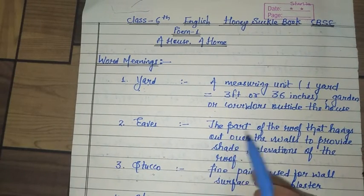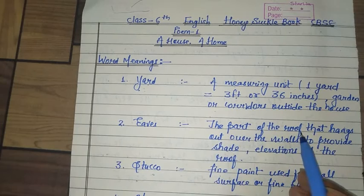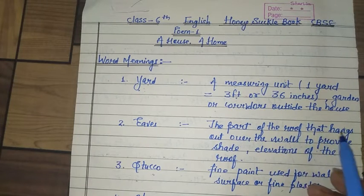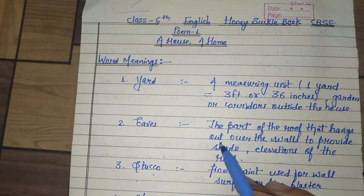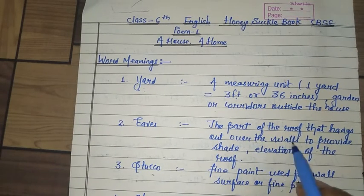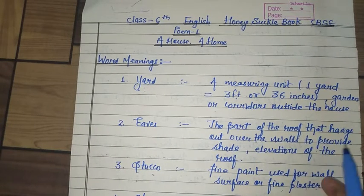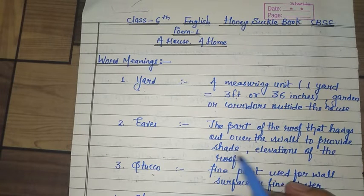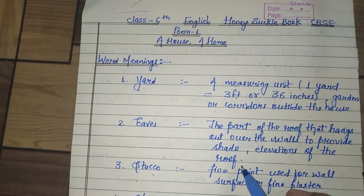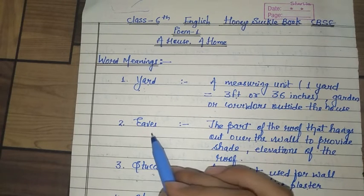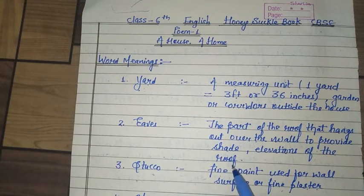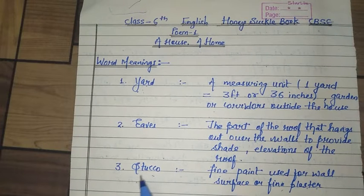Eaves — the part of the roof that hangs out over the walls to provide shade; the lower edge/elevation of the roof. Eaves kya hoti hai? Chhat ki mundir kya hoti hai — chhat ki mundir.